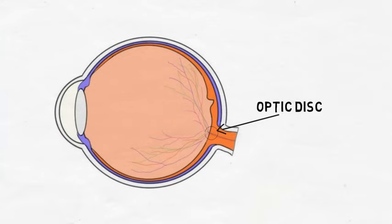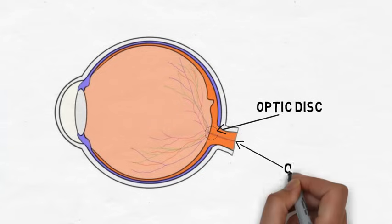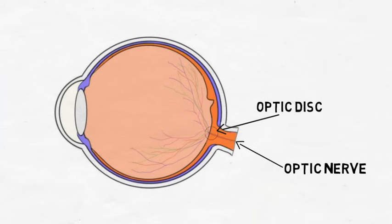However, we normally don't notice our blind spot. The brain uses information from surrounding photoreceptors and the other eye to fill in the gaps in images that are processed by the retina. After leaving the retina, the ganglion cell fibers are called the optic nerve. The optic nerve carries visual information toward the brain to be processed.